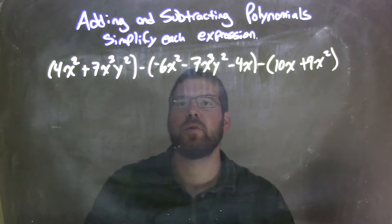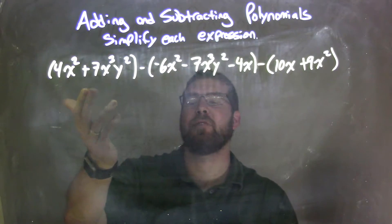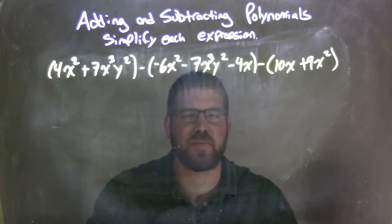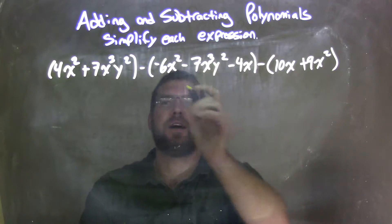First thing I want to do is look in each parenthesis. Can I simplify anything? No, I can't. There's no like terms in each set of parentheses. Now I'm going to make everything be adding negative, and I'm going to distribute my subtraction signs throughout each parenthesis.